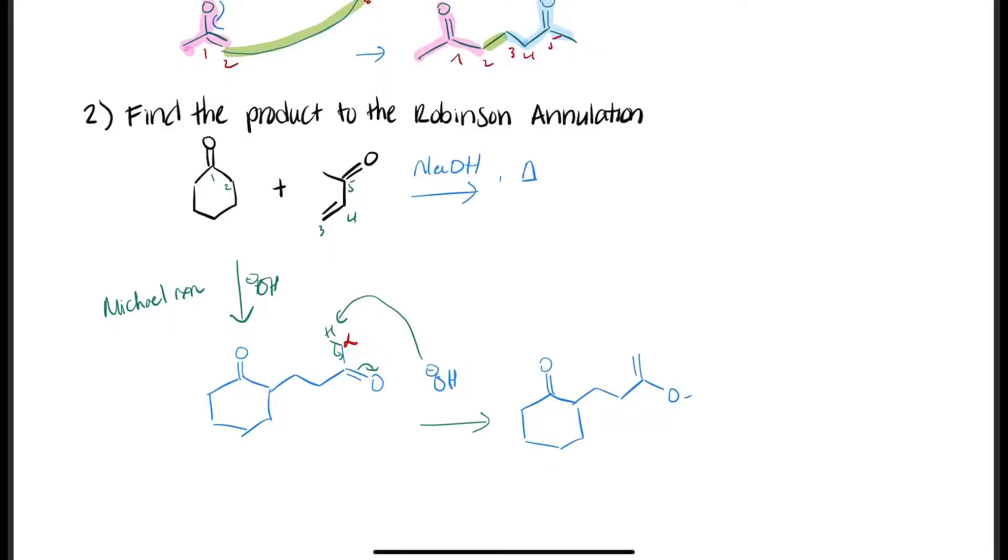So that's how we have an enolate that can do a nucleophilic attack at the carbonyl, which is the electrophile. This is our nucleophile. So let's label the carbon numbers: one, two, three, four, five, and six. So we're going to close the ring.